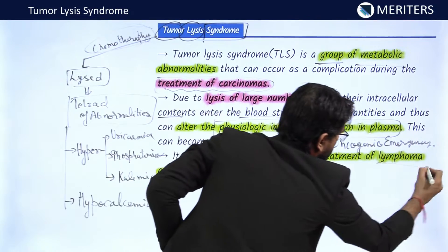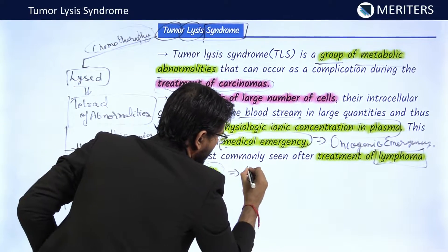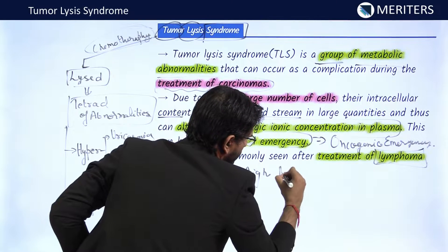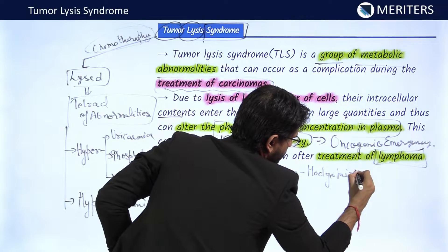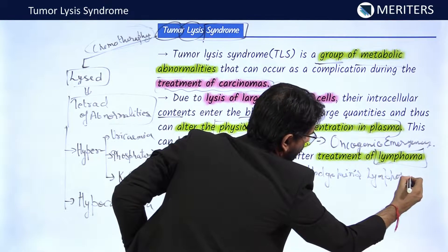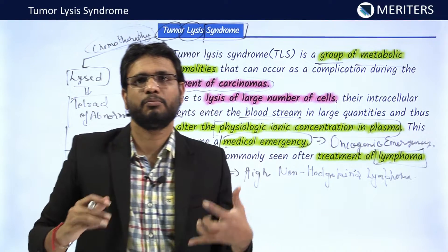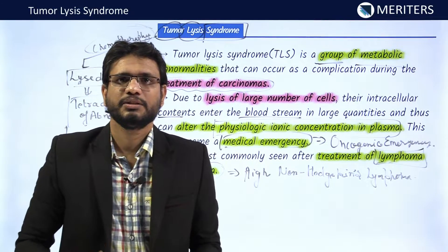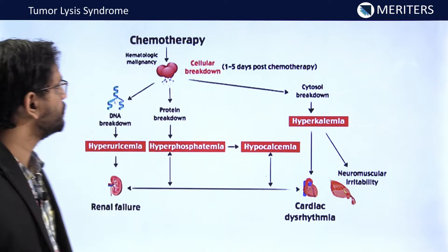Tumor lysis syndrome is most commonly seen after the treatment of certain blood diseases — leukemia, lymphoma, and high-grade non-Hodgkin's lymphomas. More particularly, Burkitt's lymphoma is associated with this syndrome. Now let's discuss the pathophysiology and the whole concept behind it.